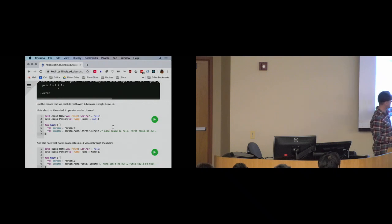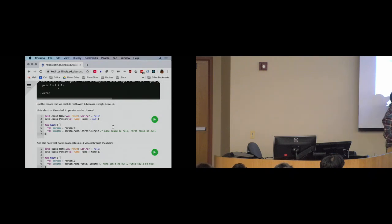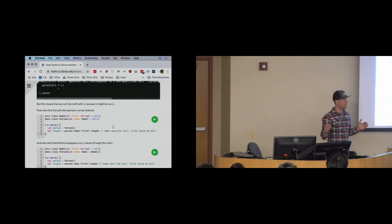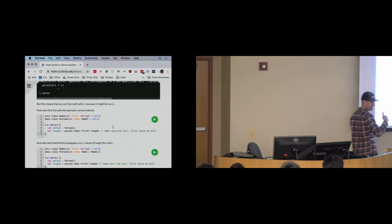The person definitely exists — Kotlin knows this, so it doesn't force me to use the safe operator on person. But the Name field could be null, so I have to use the safe dot operator there. Then first could be null, so I have to use it again. I can chain these together to provide safe access deep into a nested structure.